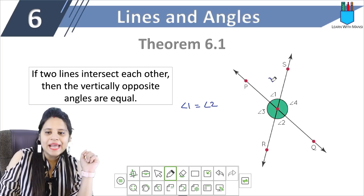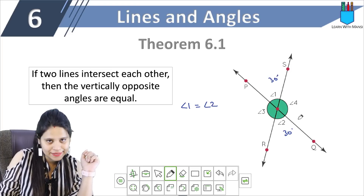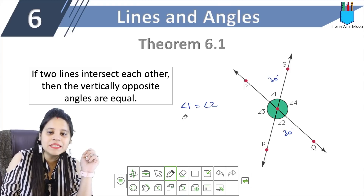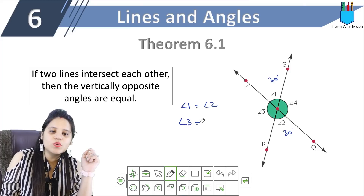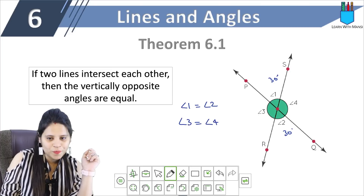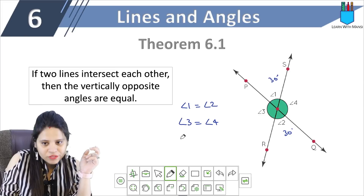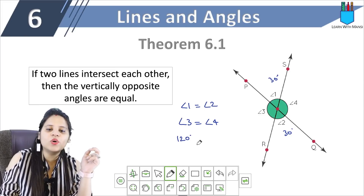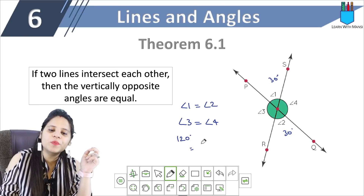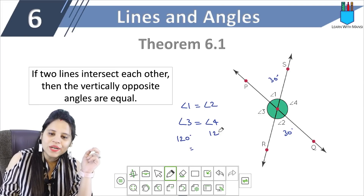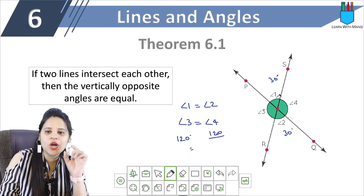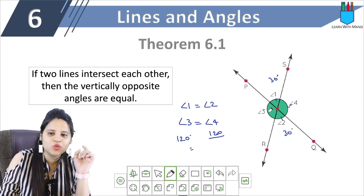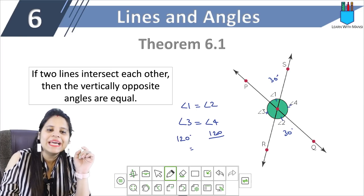If angle 1 is 30 degrees, then angle 2 will also be 30 degrees. Similarly, angle 3 is equal to angle 4. So if angle 3 is 120 degrees, then angle 4 will be 120 degrees. These vertically opposite angles are equal.